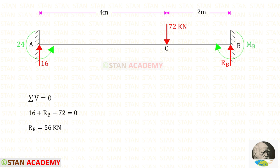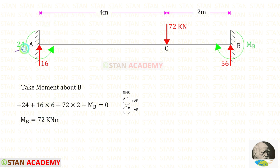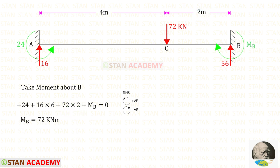Now let us apply sigma V = 0 to find RB. For RB we get 56 kN. Taking moments about B to find MB: Ra acts in the clockwise direction (positive) with distance 6; Ma acts in the anticlockwise direction (negative); the point load acts in the anticlockwise direction (negative) with distance 2. Assuming MB acts clockwise (positive), we get a positive value confirming MB acts in the clockwise direction.